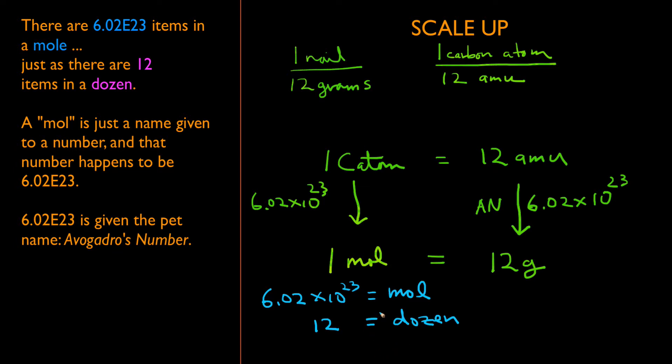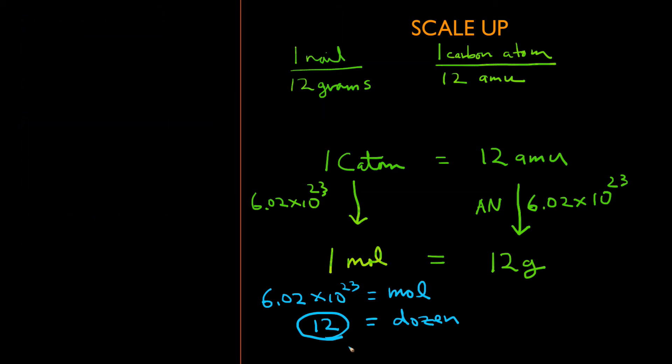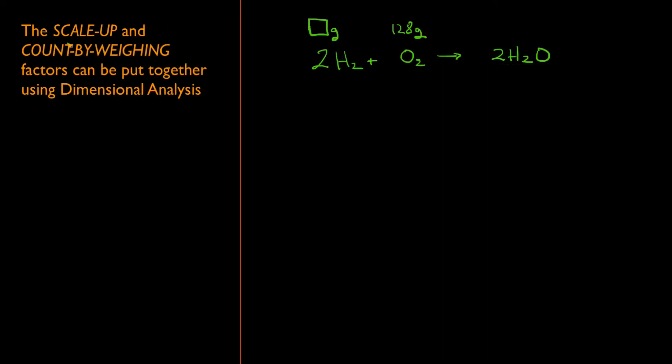So don't overthink it. It is no more complicated than that. If I say I have 2 moles of something, it means I have 2 times this quantity, just like if I said I had 2 dozen items I would have 2 times that quantity. Now that we know how to scale up and count by weighing, it is time to return to our original problem.